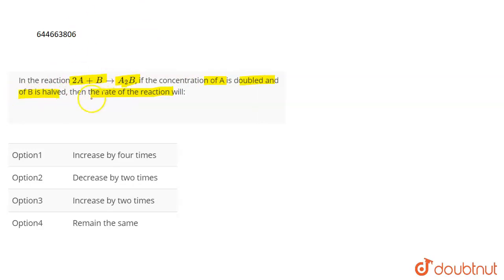You're given a reaction and it's not mentioned whether it is an elementary reaction or not. For this case where we have to see what will be the effect on the rate of the reaction if we are doubling the concentration of one reactant and halving the concentration of the other reactant.